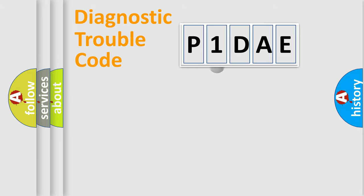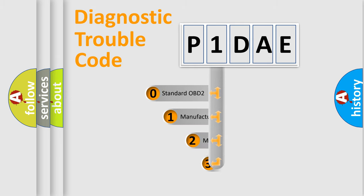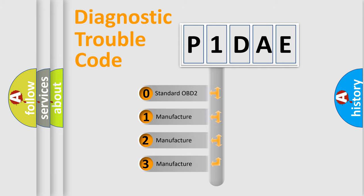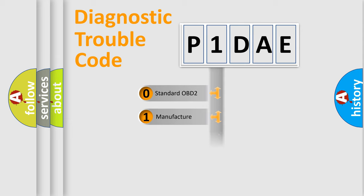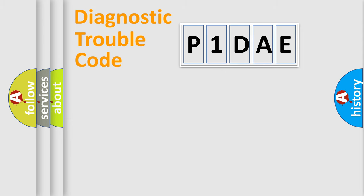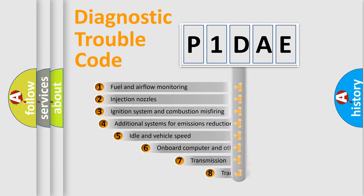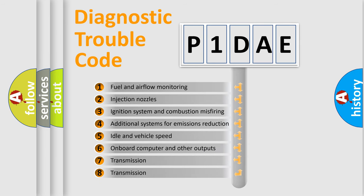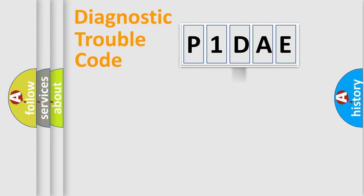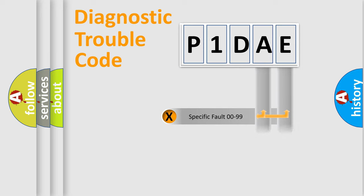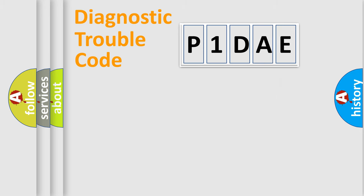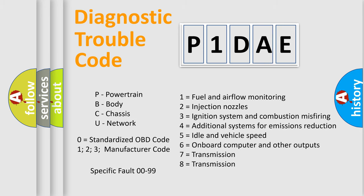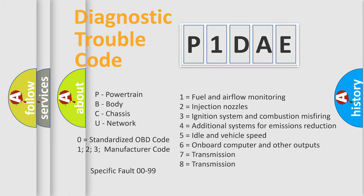This distribution is defined in the first character of the code. If the second character is expressed as zero, it is a standardized error. In the case of numbers 1, 2, or 3, it is a more manufacturer-specific expression of the car error. The third character specifies a subset of errors. The distribution shown is valid only for the standardized DTC code. Only the last two characters define the specific fault of the group. Note that such a division is valid only if the second character code is expressed by the number zero.